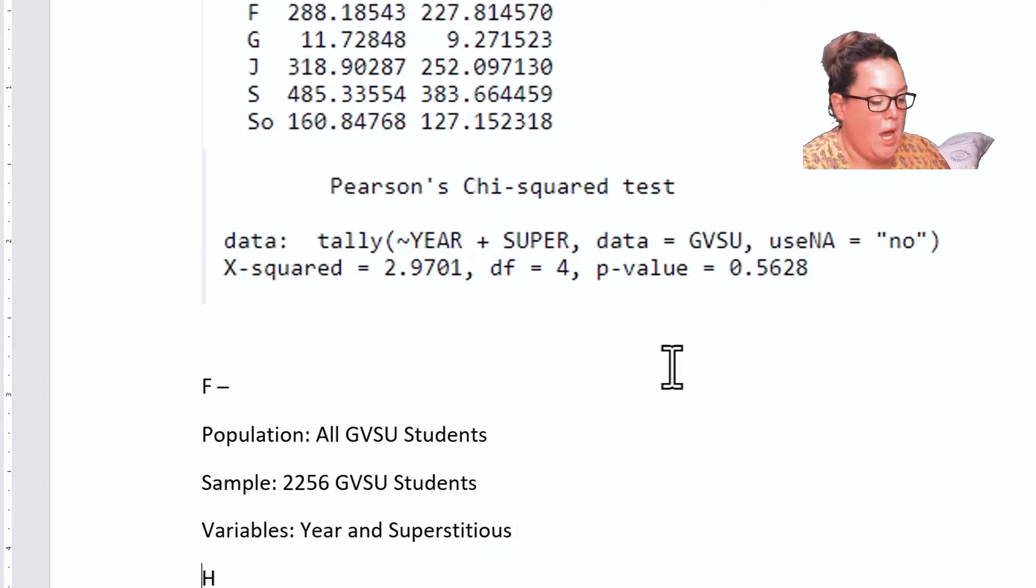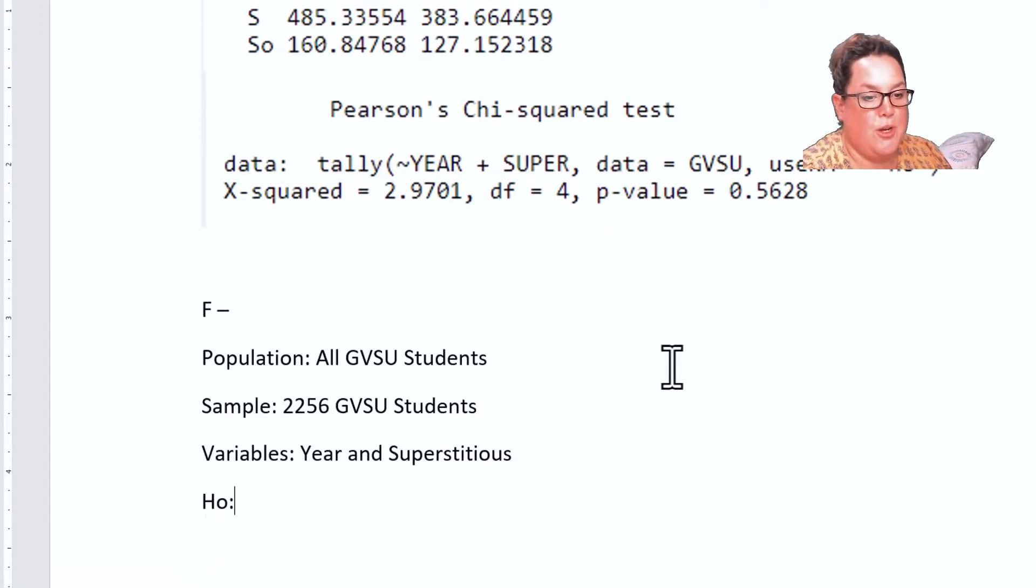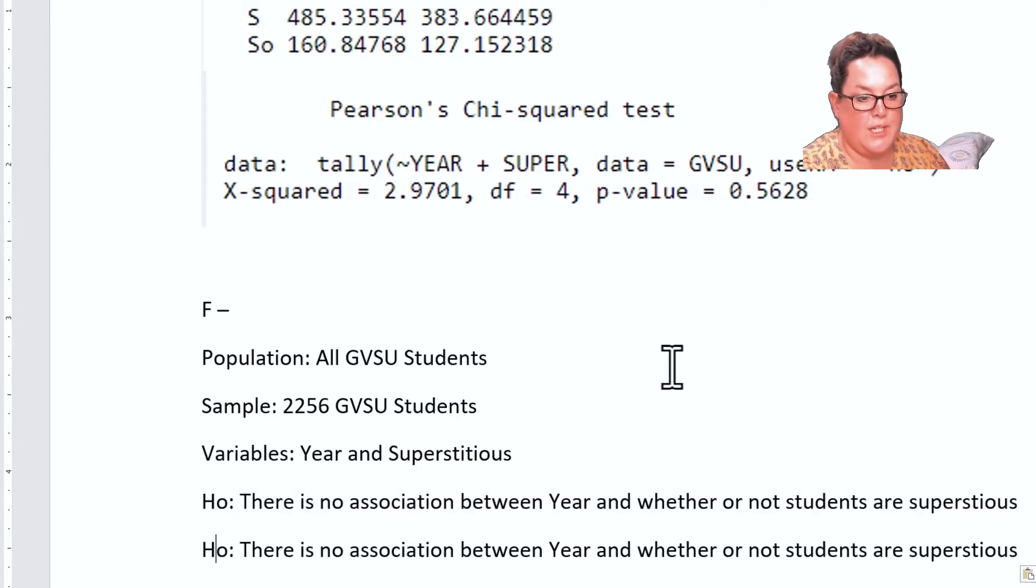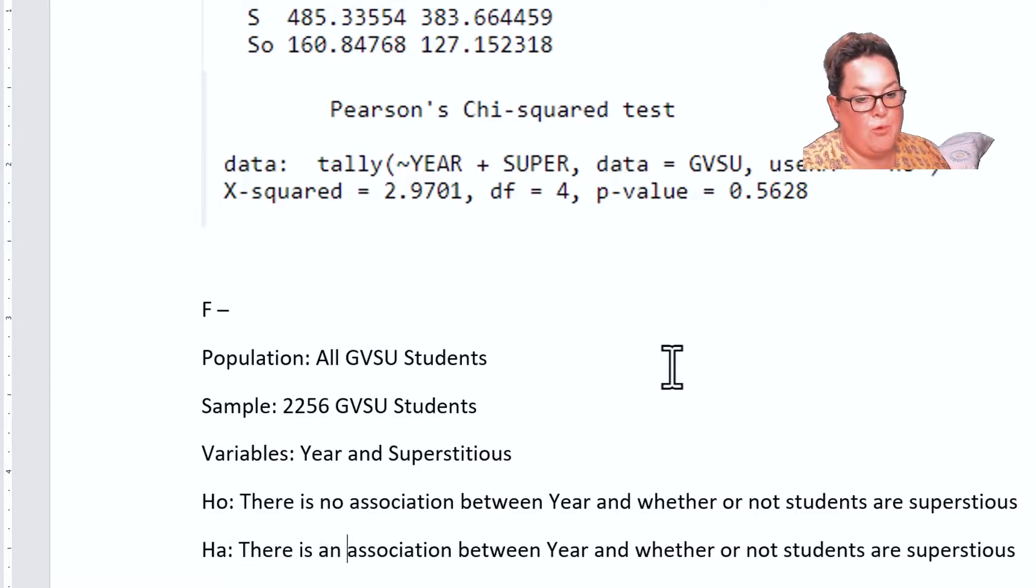We have to remember to write the null and alternative. Remember that the null is always there is no association. H sub 0 goes with no, so there's no association between year and whether or not students are superstitious. I'm going to do the alternative and remember that the only thing that changes is instead of no we have an, so there is an association.